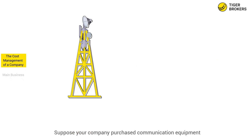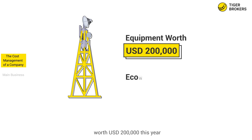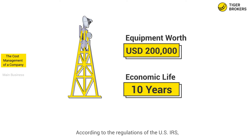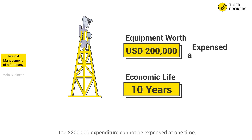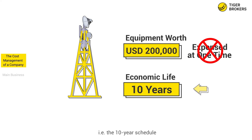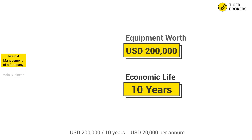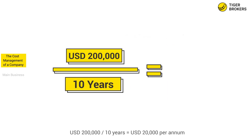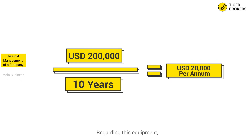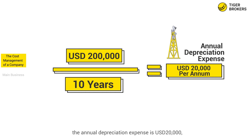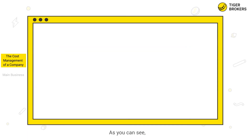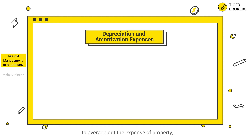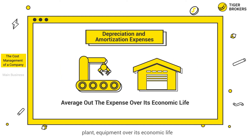Suppose your company purchased communication equipment worth $2 million USD this year, and the economic life of the equipment is 10 years. According to the regulations of the U.S. IRS, the $2 million expenditure cannot be expensed at one time, but shall be included in the depreciation expenses of each year on a 10-year schedule. In other words, the annual depreciation expense is $2 million divided by 10 years, equals $200,000 per annum. The annual depreciation expense is $200,000, amortized year by year, and after 10 years the equipment will be scrapped. Depreciation and amortization is applied to average out the expense of property, plant, and equipment over its economic life.